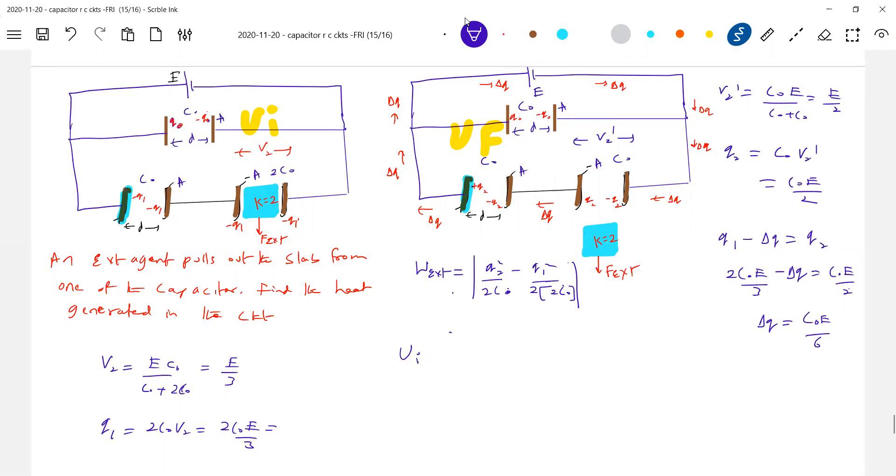So then the equation will be Ui plus work done by cell plus work done by external agent equal to Uf plus H. Q2 by 2C0, Q2 by 2C0, so Q1 square by 2 into 2C0. Work done by cell minus Delta Q into E. Work done by external agent mod of Q2 square by 2C0, 4C0 is equal to Uf. Uf will be Q0 square by 2C0 plus Q2 square by 2C0 plus heat generated. So all this will get expression for H.